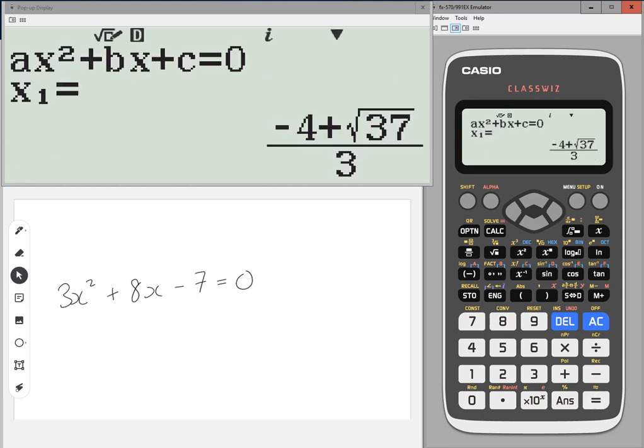And the first solution it comes up with, x is equal to minus 4 plus root 37 over 3. And press equals again and it will get you the second solution, so it's plus or minus those.